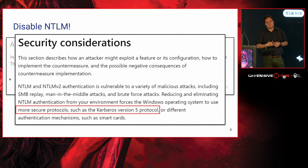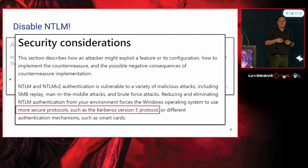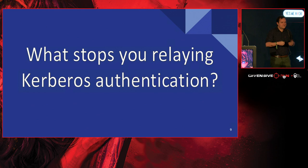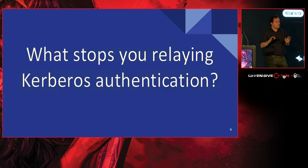The documentation specifically states you should turn off NTLM because you should really be using more secure authentication protocols like Kerberos version 5, introduced in Windows 2000 — over 20 years ago. But this got me thinking: if NTLM is relayable, what is actually stopping you from relaying Kerberos? Is there some fundamental principle which makes it completely unrelayable? This basically formed the foundation of my research.